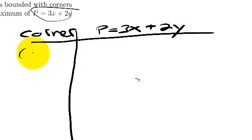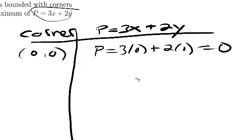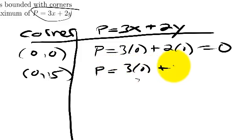Now, let's try zero, zero. And this one should be easy, because when you plug in zeros, you get zero. If we plug in zero, fifteen, we'll get three times zero plus two times fifteen, which equals thirty.